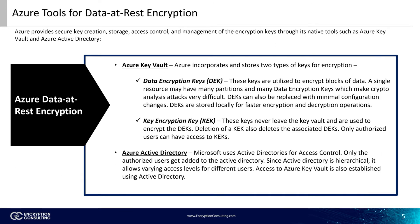Microsoft Azure incorporates and stores two types of keys for encryption. First is data encryption keys, or DEKs. These keys are stored locally for faster access and are utilized to encrypt blocks of data. A single resource may have many partitions and many data encryption keys. DEKs can be replaced very easily and it only affects a small block of data at a time. The other type of key is a key encryption key, or KEK. These keys never leave the key vault and are used to encrypt DEKs through a method known as envelope encryption. Deletion of a KEK also deletes the associated DEK. Only authorized users have access to KEKs, which can be managed using the key vault.